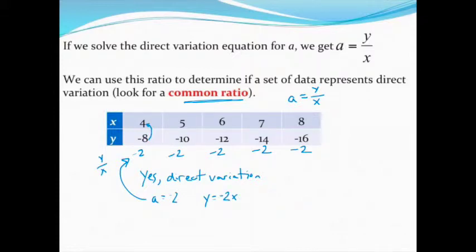Now again, just be really careful that you do y divided by x. If you flip it and do this the incorrect way and do x divided by y instead, you'll see that you'll sort of get one of the answers right. Each time you divide, you're going to get a ratio of negative 1 half when you do that.